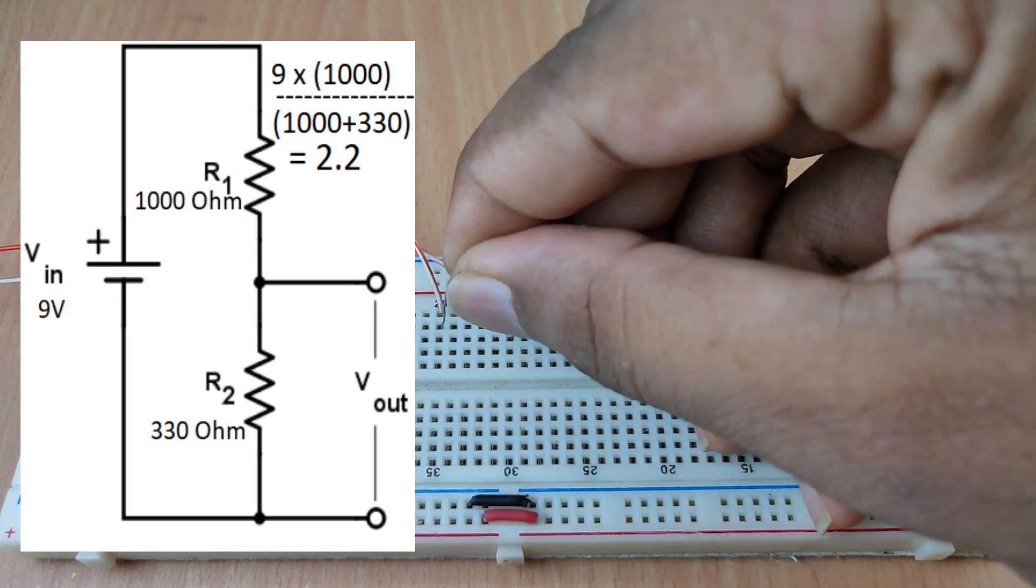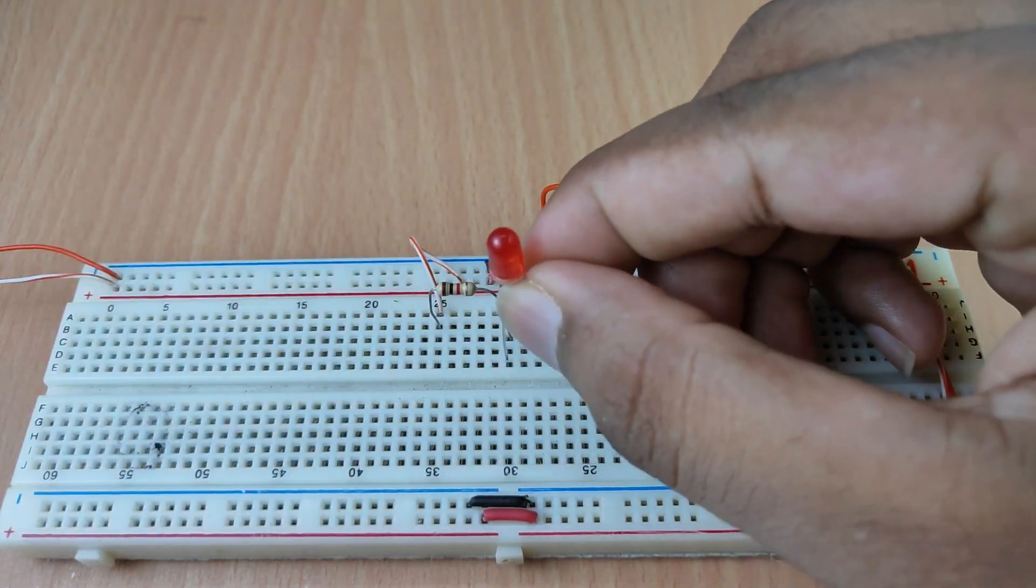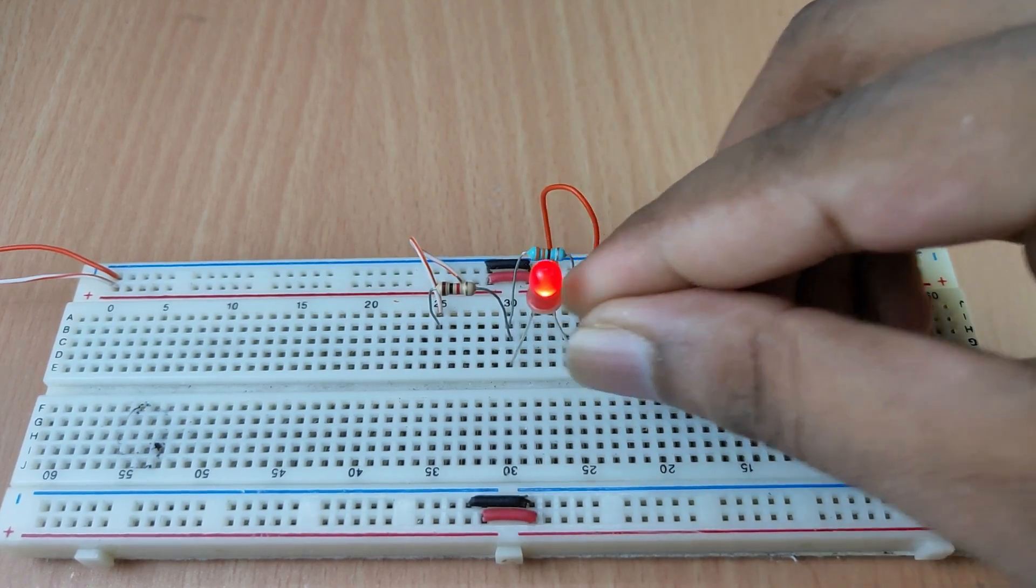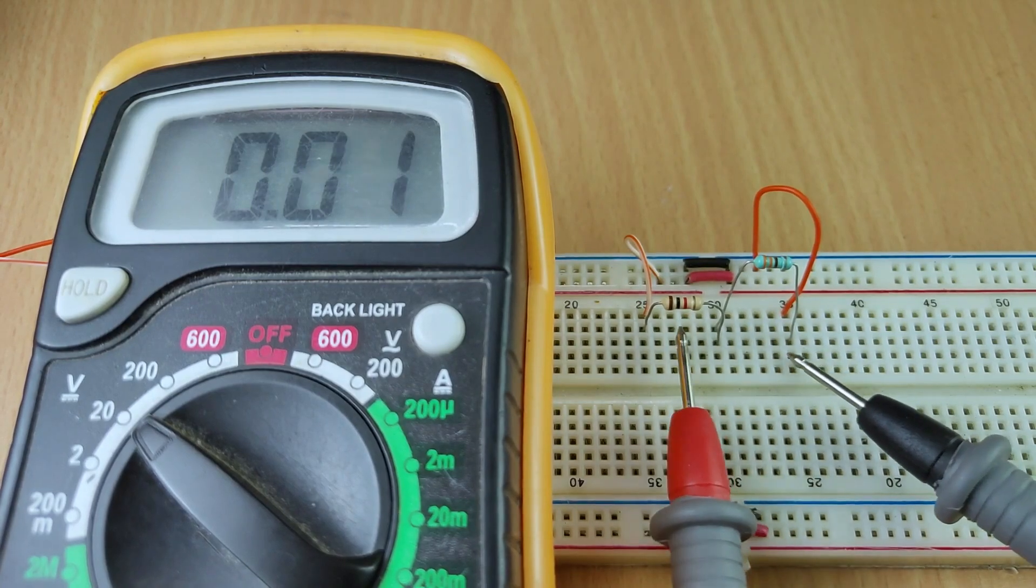We may think by creating a voltage divider of 2.2V might work the same, but we may see the LED is dimmer than before, even though it gives the constant forward voltage of 2.2V.